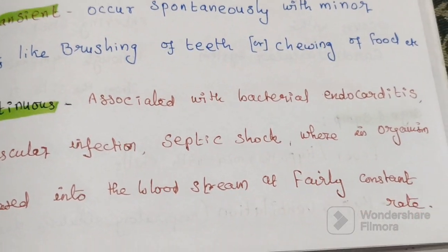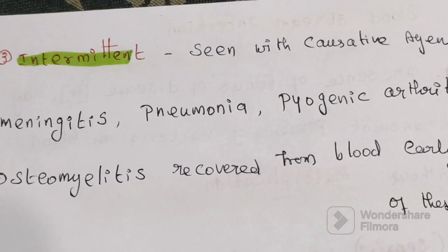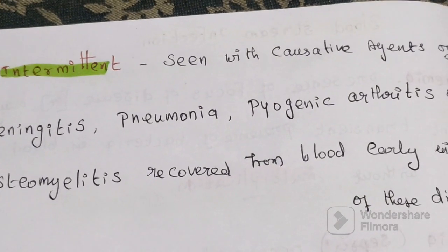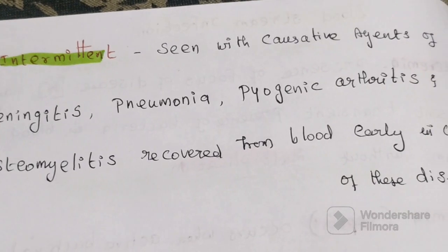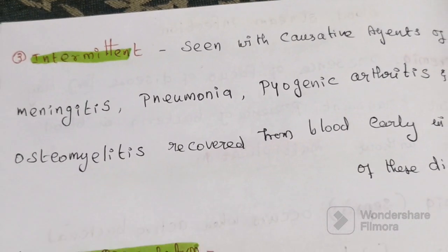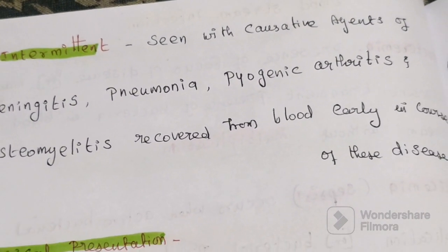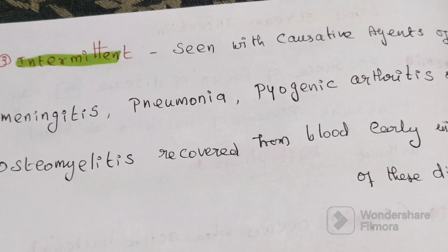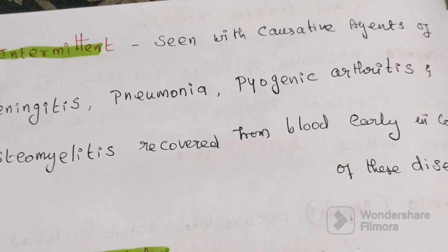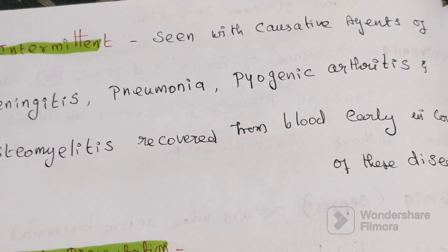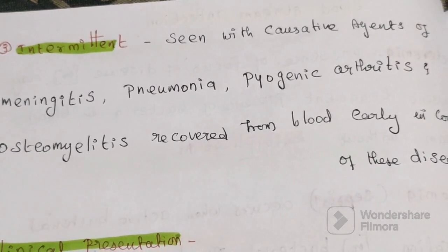The third type is intermittent bacteremia. Intermittent bacteremia is seen with causative agents of meningitis, pneumonia, pyrogenic arthritis, and osteomyelitis, and is recovered from blood early in the course of the disease.